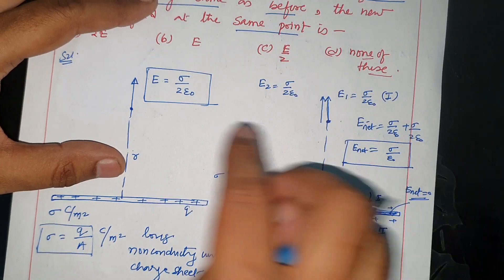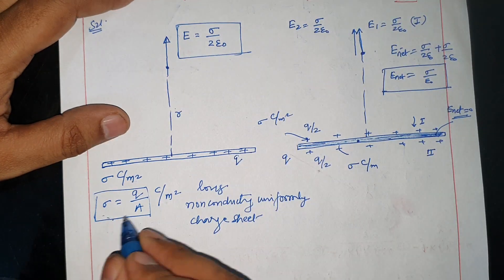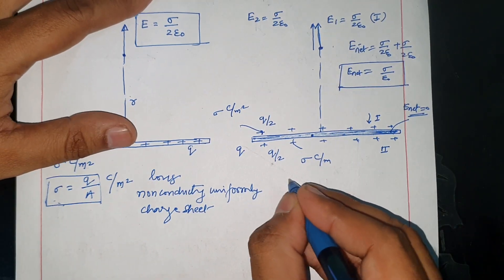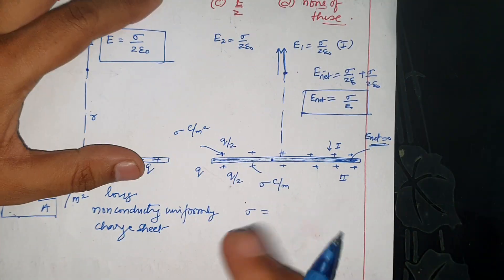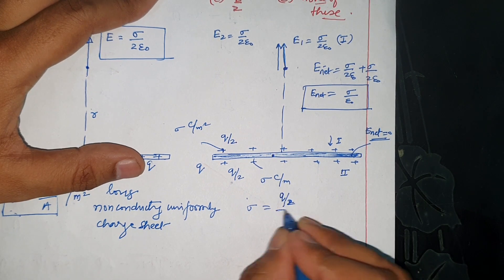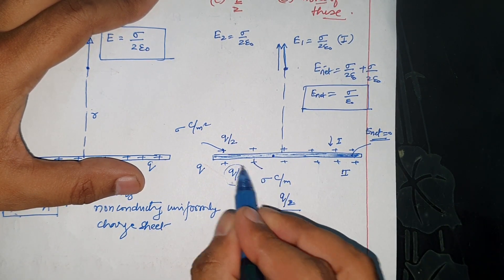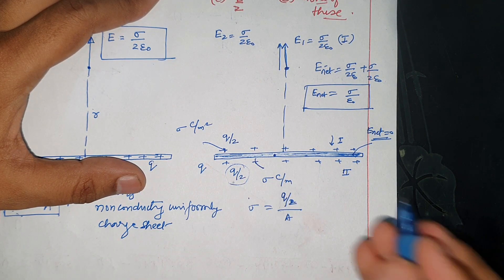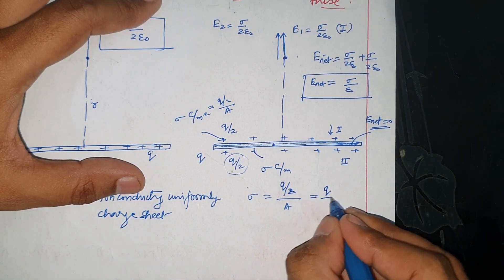Students may be confused that the two electric fields are different. But notice: for the non-conducting sheet, σ = Q/A. For the conducting sheet, each surface carries Q/2, so its σ = (Q/2)/A = Q/(2A). These sigma values are different — the non-conducting σ is Q/A, while the conducting surface σ is Q/(2A).